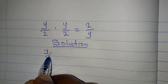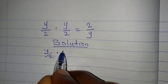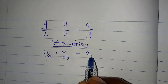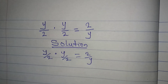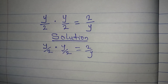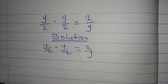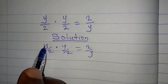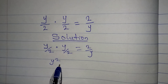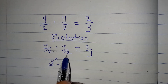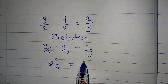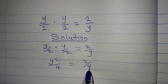We have y/2 multiplied by y/2 equal to 2/y. The first step is to multiply the left-hand side: y times y gives y squared, and 2 times 2 gives 4, so we have y squared over 4 equal to 2 over y.